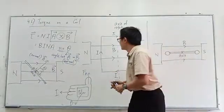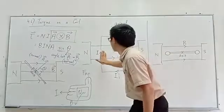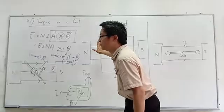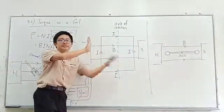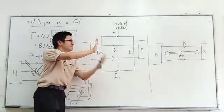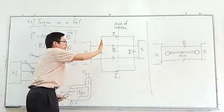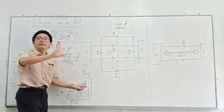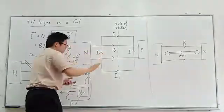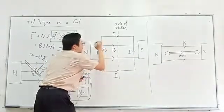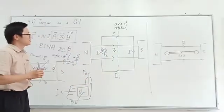For the first part: the current goes up, and the magnetic field is to the right, so the thumb points to the right. Our thumb — which represents the magnetic force — points into the plane. So the magnetic force on this side is into the plane.